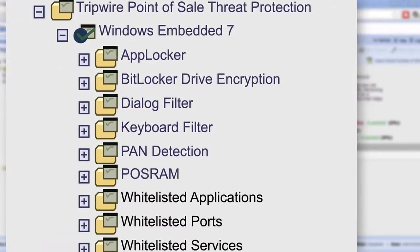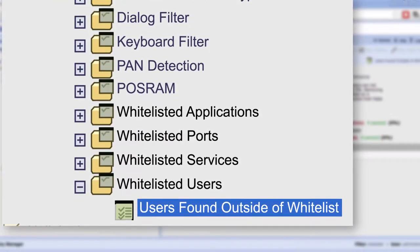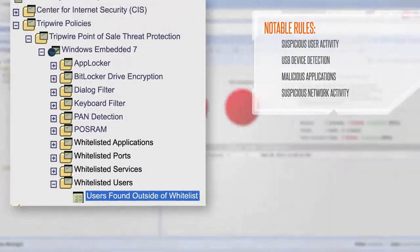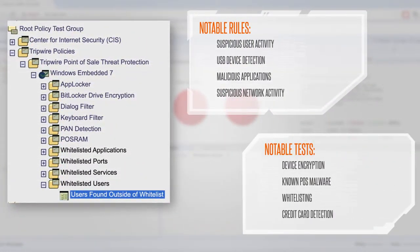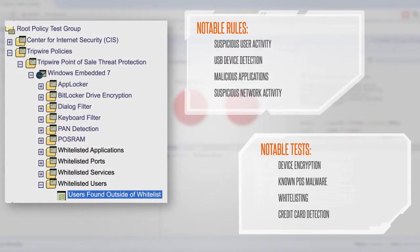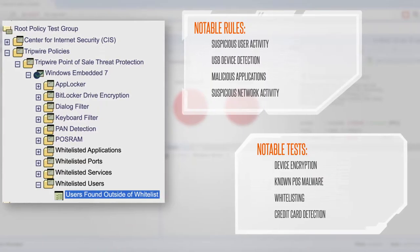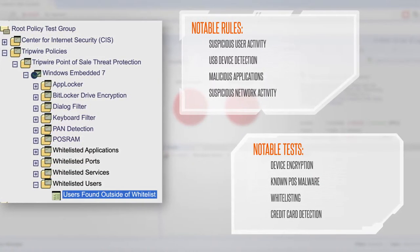These are examples of the threat protection rules. There are 35 new rules and 55 new tests tailored toward point-of-sale devices.